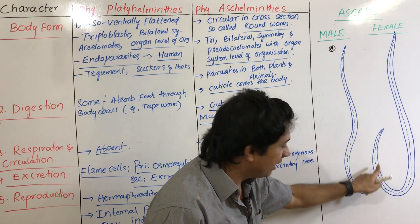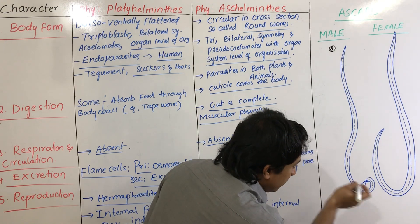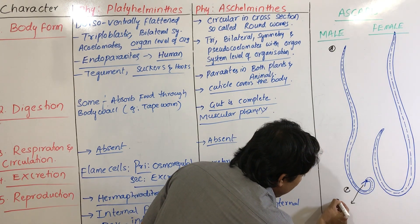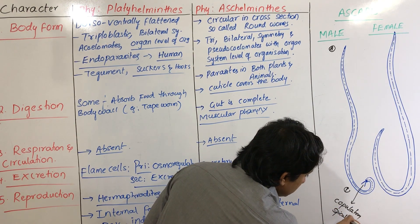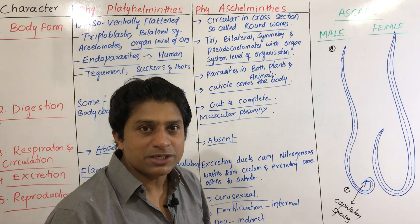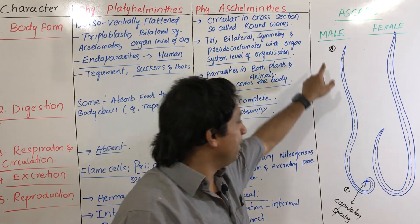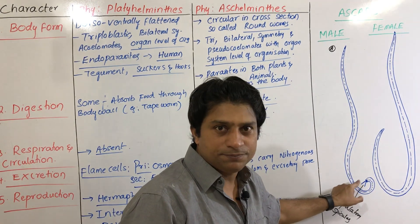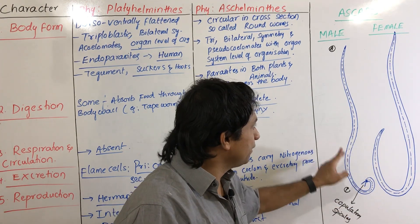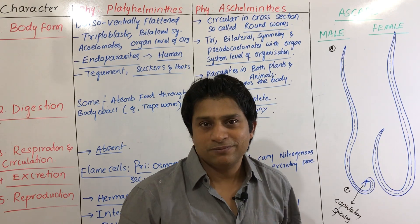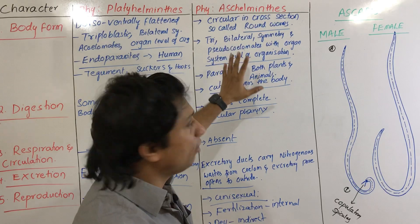The second character: the posterior end of the male is curved while the female's is straight. Near the posterior end of the male, there are a pair of copulatory spicules, which are absent in the female. Additionally, the male has a cloaca while the female has an anus. This is how sexual dimorphism is observed in Aschelminthes.